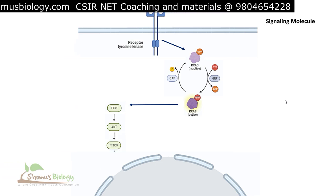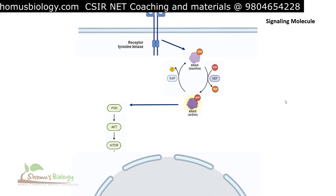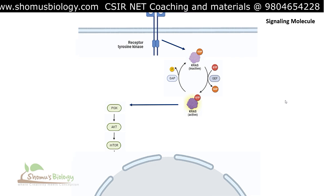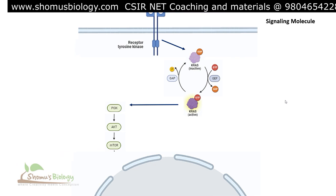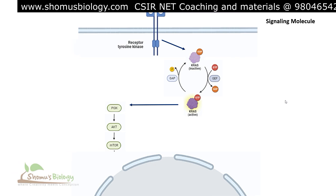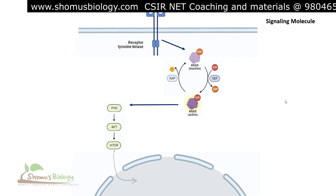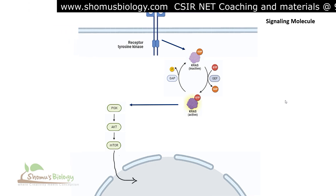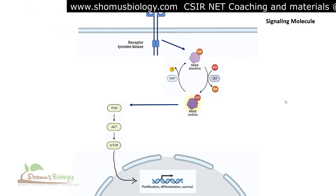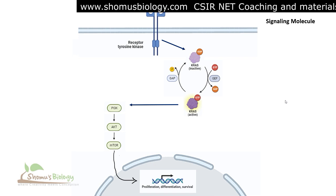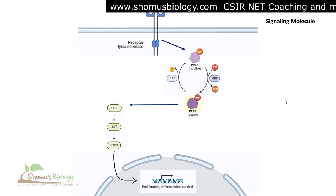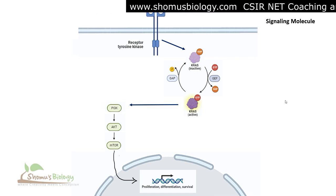This AKT is going to activate mTOR protein. The mTOR protein is going to go inside the nucleus and activate specific genes for transcription, leading to proliferation, differentiation, and survival of the cell.